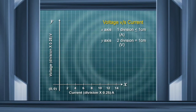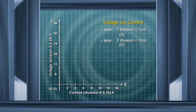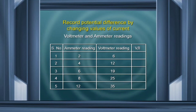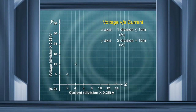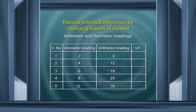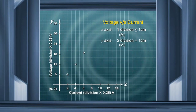We need not mark any more because we do not have readings beyond that. On the y axis, with two divisions equal to 1 centimeter, we put 6 for 3 centimeters, 12 for the next 3 centimeters, then 24 and further. Now let us plot the points: 2 and 6 gives our first point, 4 and 12 gives the next, 6 and 19, 8 and 25, and 12 and 35.